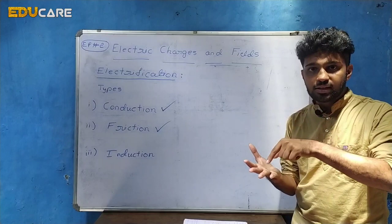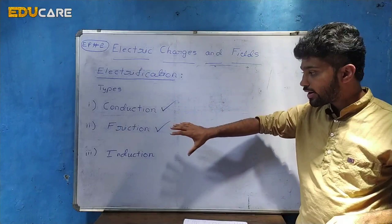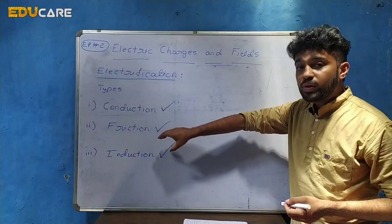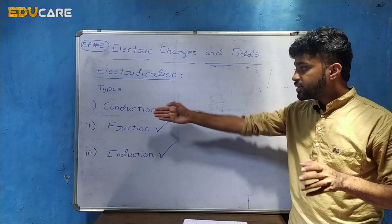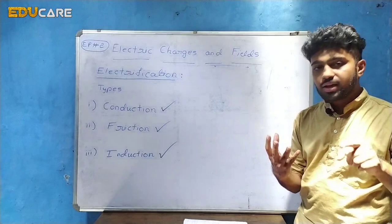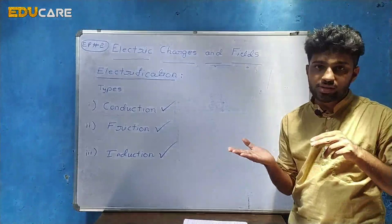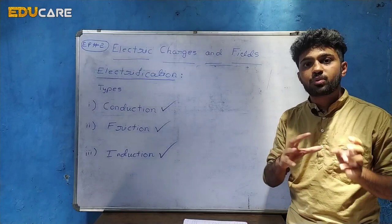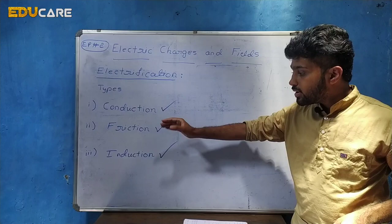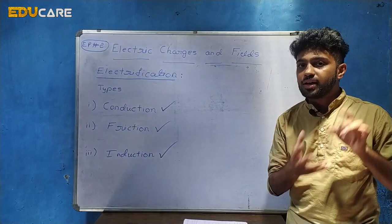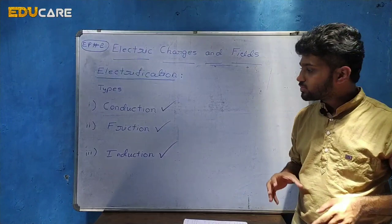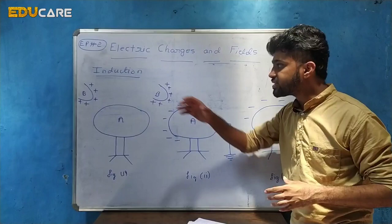The method of friction should now be clear. Now, the last concept is induction. In the first two cases we have seen that there is a physical contact between the two objects — in conduction and in friction. But in induction there is no physical contact between the neutral body and the charged body; yet we use this induction process to charge the uncharged or neutral body. To understand it we have to draw a diagram, so give me some time to draw it.